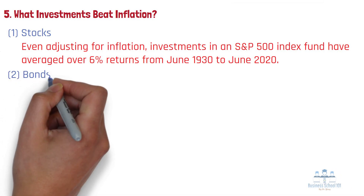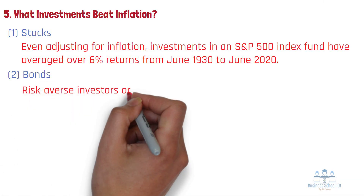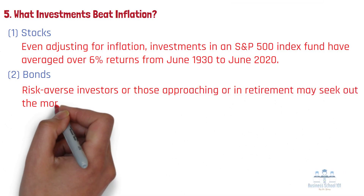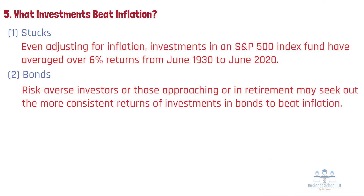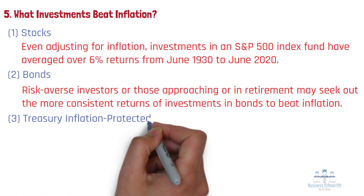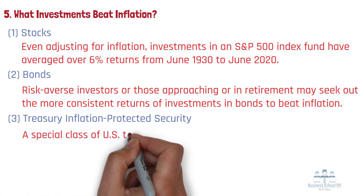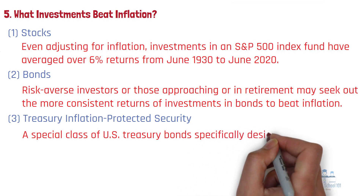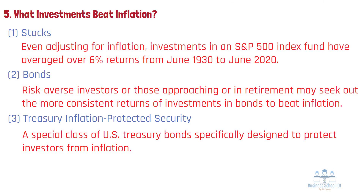Second, Bonds. Bonds on average offer lower returns than stocks, but they can also regularly beat inflation. Third, Treasury Inflation Protected Securities, or TIPS, are a special class of U.S. Treasury bonds specifically designed to protect investors from inflation. TIPS automatically adjusts the value of your investment based on changes to CPI, meaning the value of your bond rises with inflation.